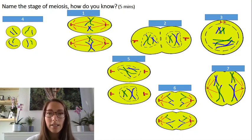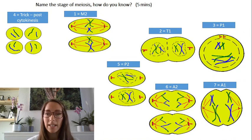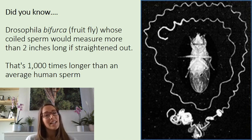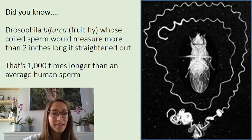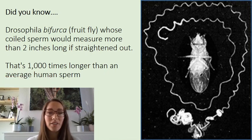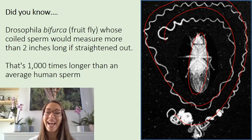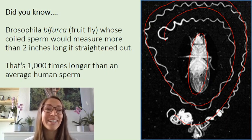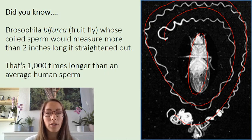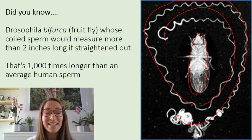Let's have a look at the answers for that — hopefully we identified these stages. Also, there's an interesting fact: there's a type of fruit fly whose sperm actually measures a thousand times longer than human sperm, measuring about two inches long. You can see the flagellum winds around more than twice. Maybe have a think about what the evolutionary benefit might have been for that and send your teacher some ideas.